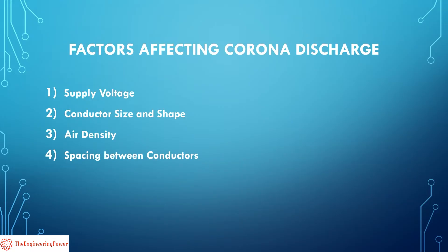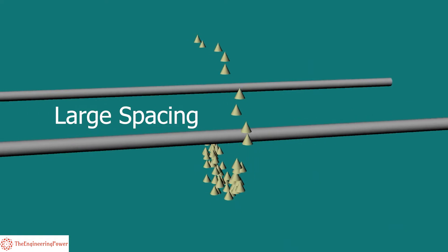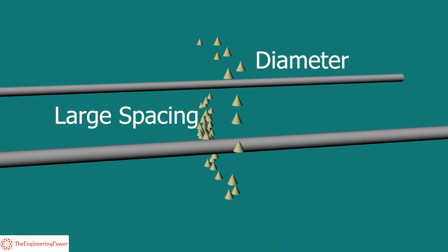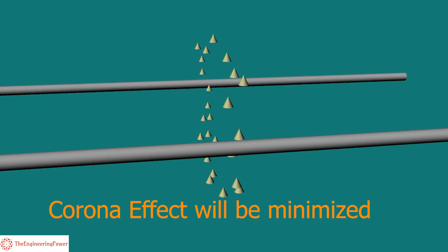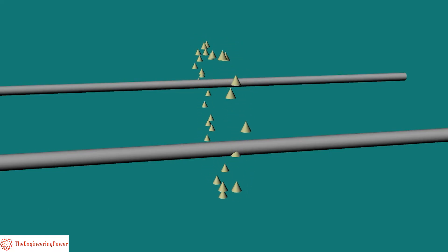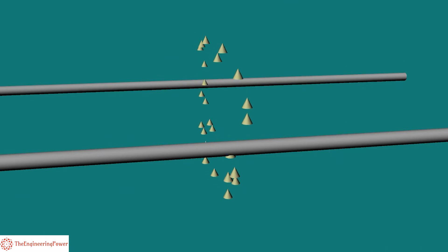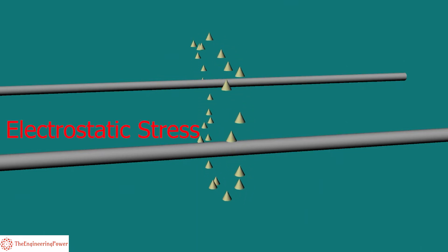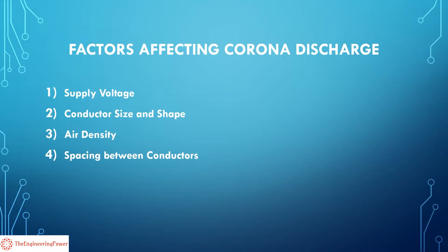Spacing between the conductors also affects the corona discharge. If the spacing between two conductors is very large compared to the diameter of the conductor, the corona effect will be minimized. This happens because by increasing the distance between conductors, the electrostatic stress at the conductor surface is reduced, resulting in very low corona discharge.